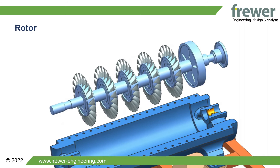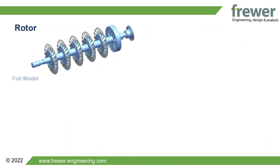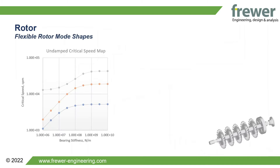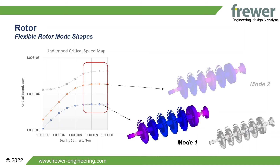Finite element analysis can be used to accurately predict the natural frequency modes of the rotor, using either one, two or three dimensional models. The two different regions of the undamped critical speed map help identify where rotors change from being rigid to flexible in their mode shapes.